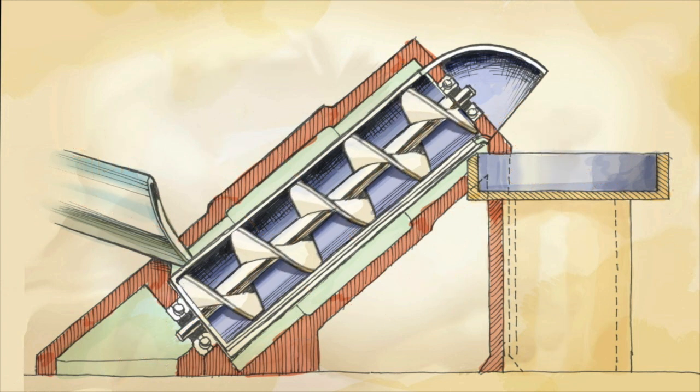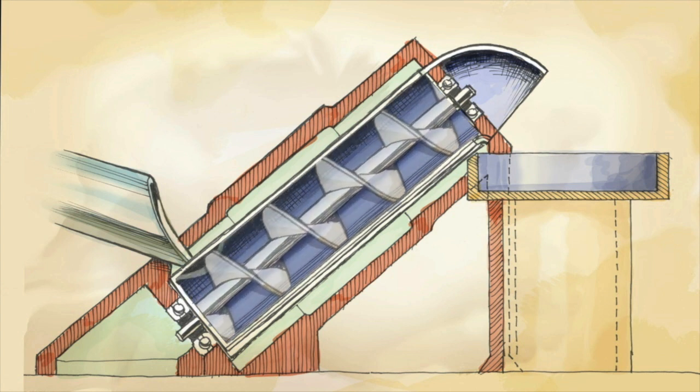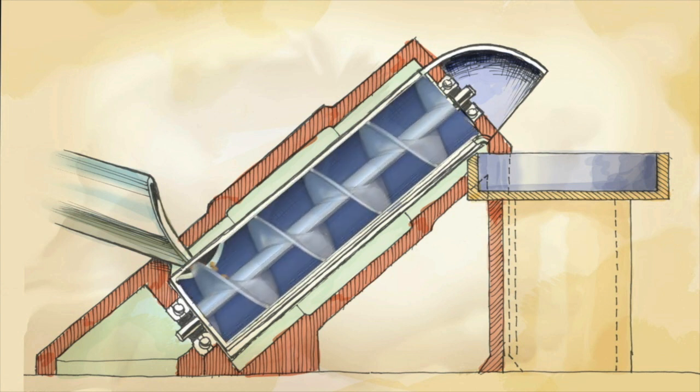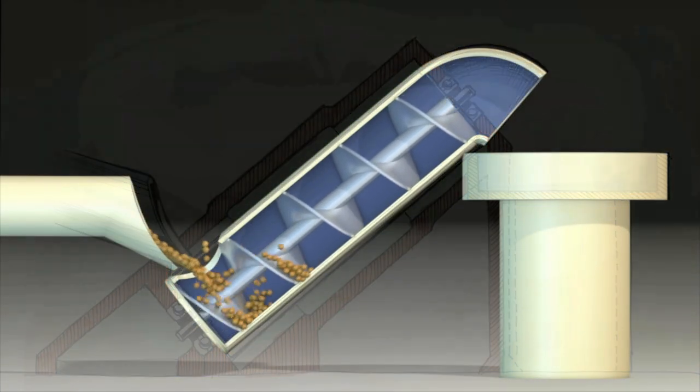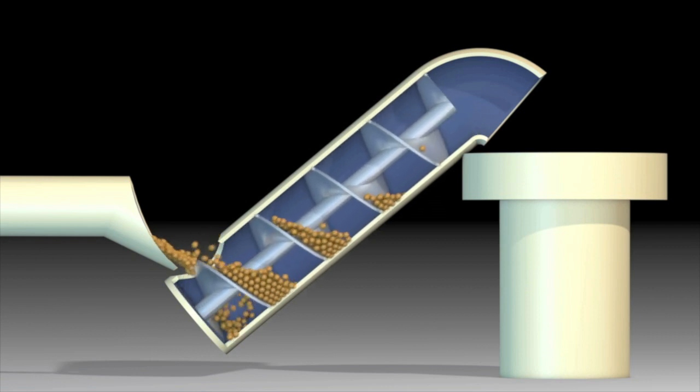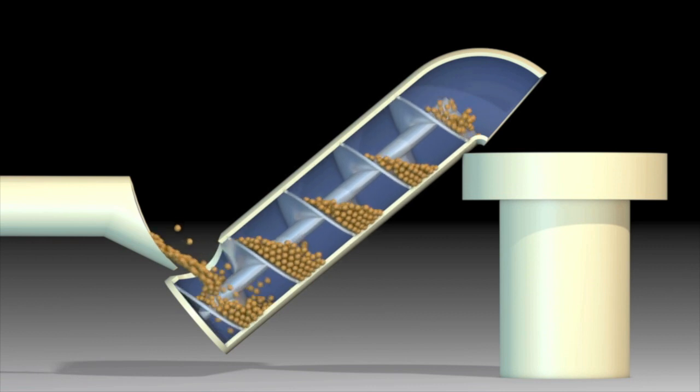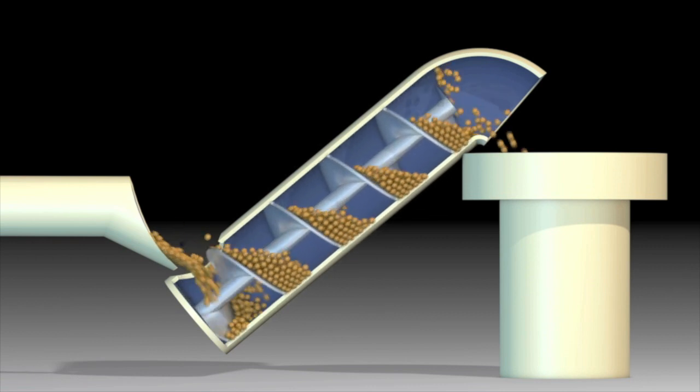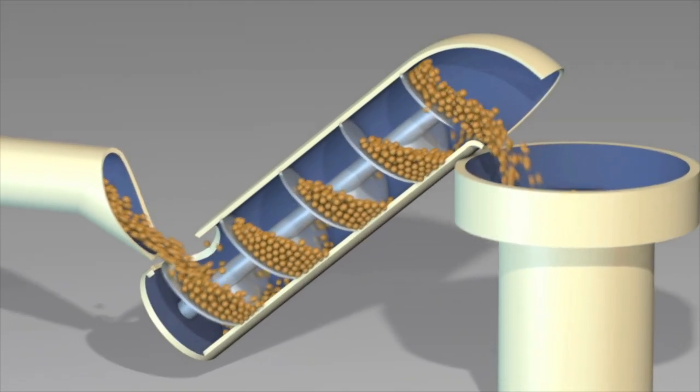The Archimedes screw was first put to use for displacing grain and other cereal crops. A simple and effective way of moving large amounts to load farm vehicles and warehouses. Grain is fed into the turning screw. The helix action of the blades displaces the material, pushing it through to the other end.